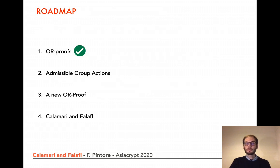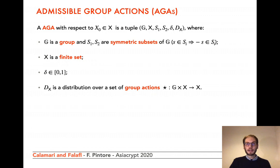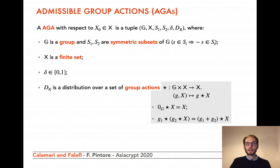I'll now specify what we call admissible group actions. This concept is rather general and it captures different cryptographic frameworks. An admissible group action is a tuple composed by a group G, two symmetric subsets of G — S1 and S2 — i.e., sets that contain the opposite of each of their elements, then a finite set X, an integer delta between 0 and 1, and a distribution dx over a set of group actions of G on X. We recall that a group action is a map from G times X to X itself, such that the zero element fixes the elements of X and the action respects the group operation.